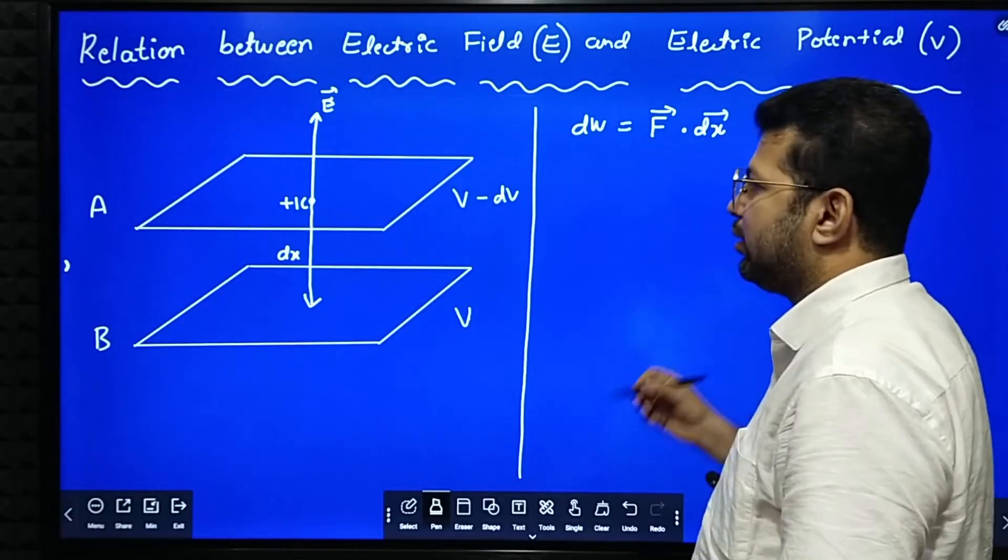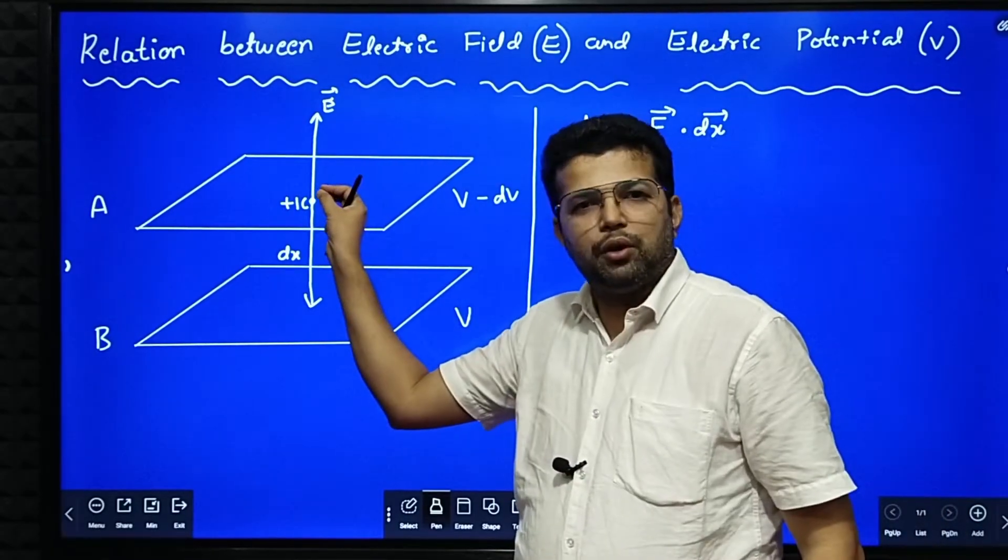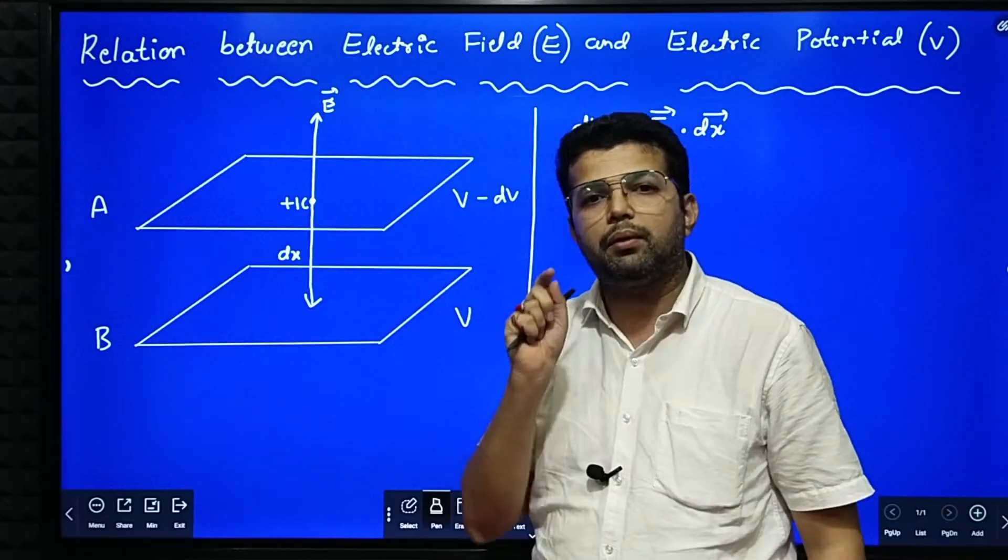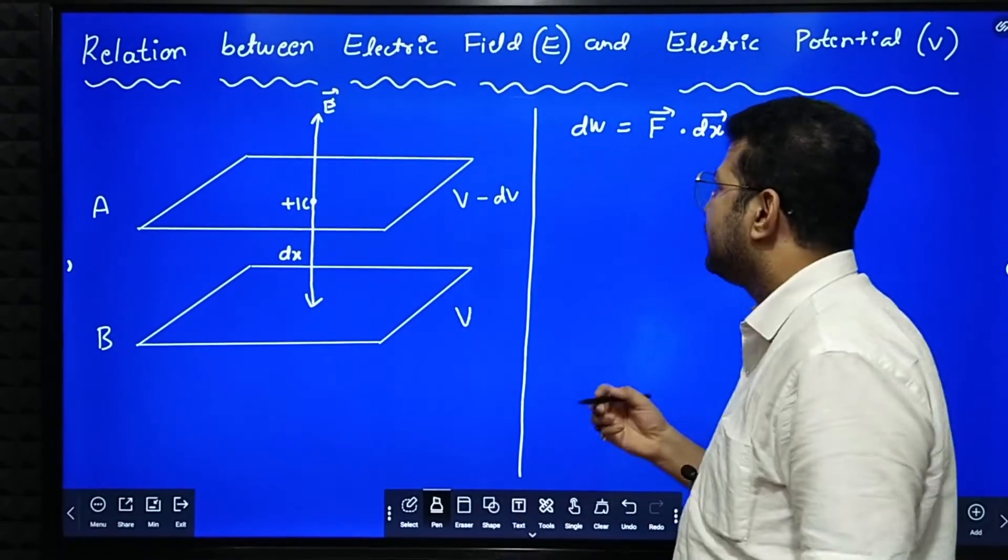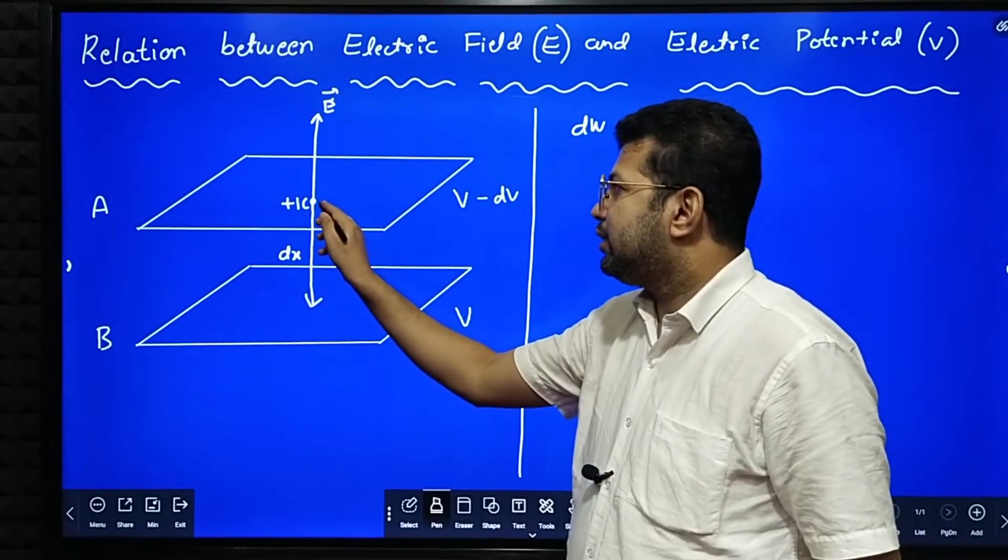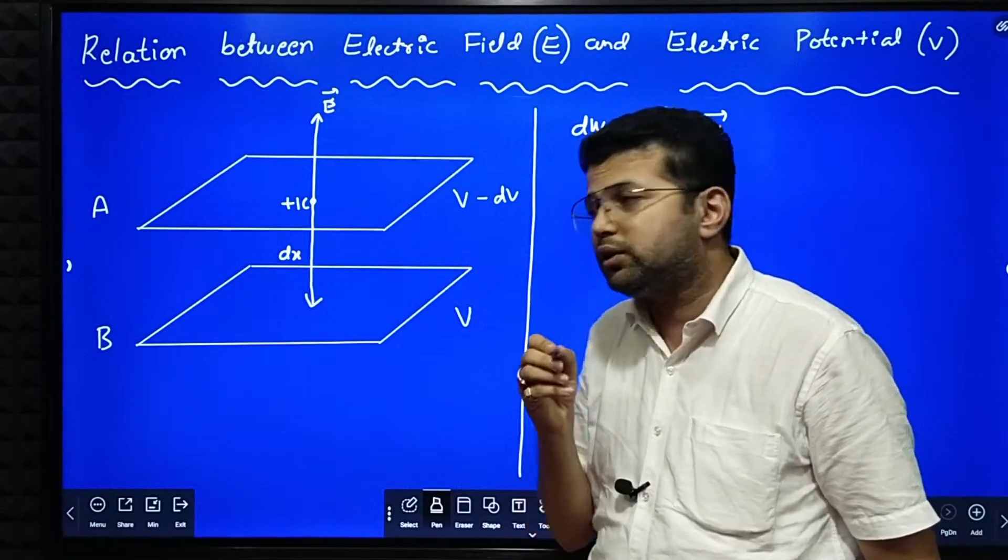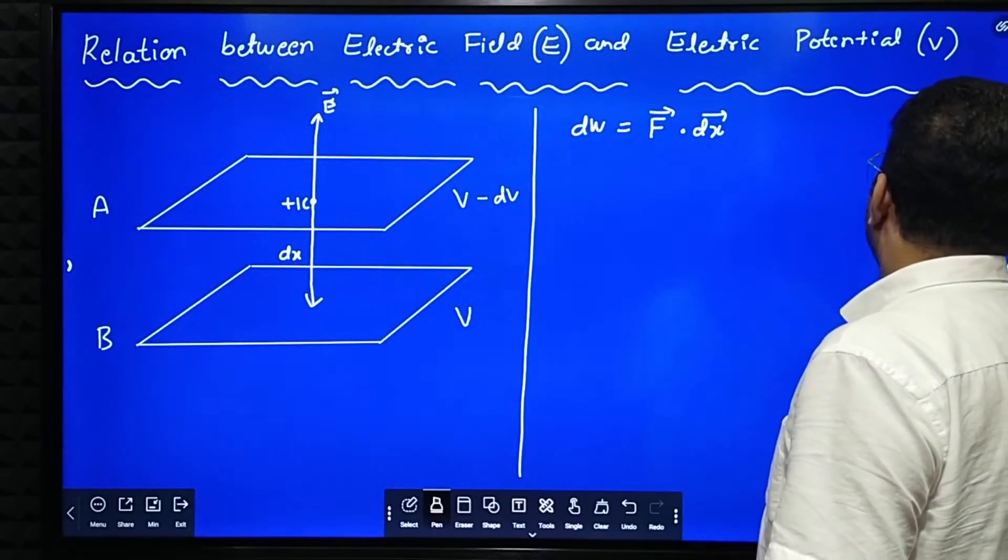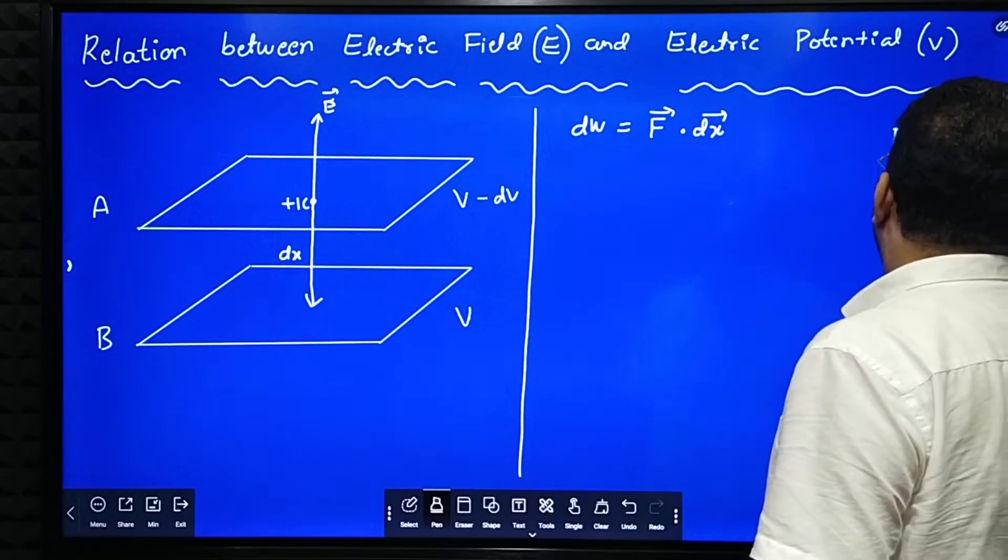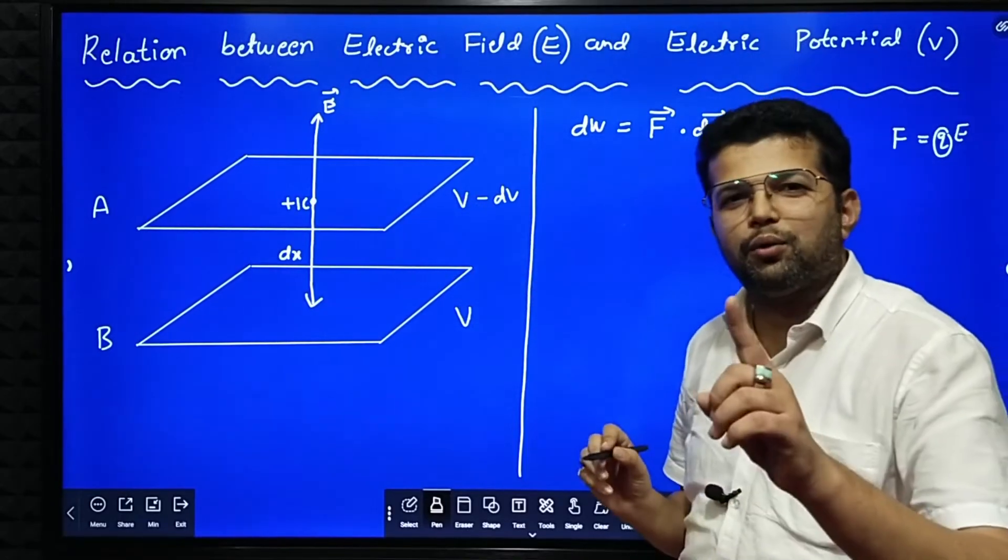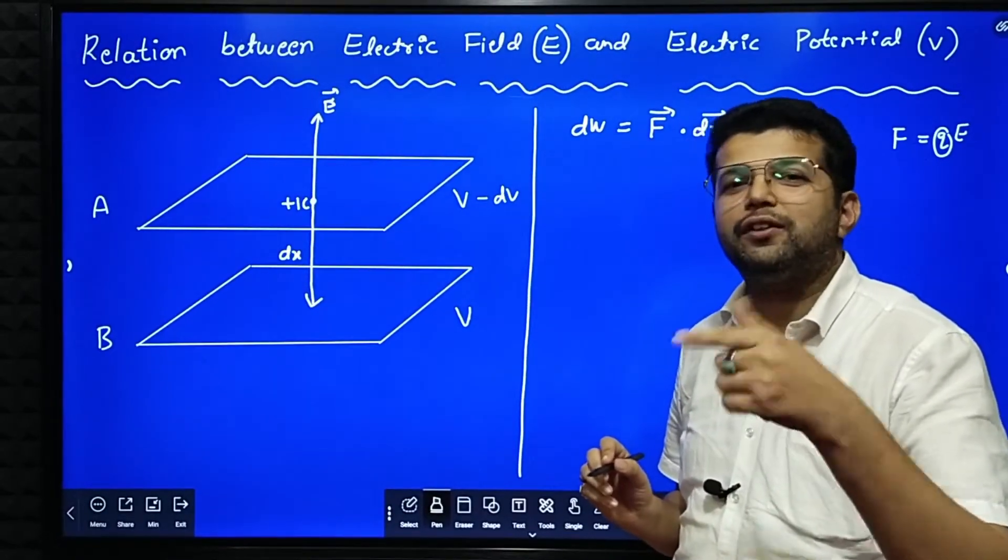Now if you observe here, we are displacing the unit positive charge downwards. Electric field is upwards. So angle between them is 180 degree. And since there is a unit positive charge, what is the force on unit positive charge? Force on unit positive charge is equal to Q into E. What is Q here? Q is equal to 1. Therefore F is equal to E.